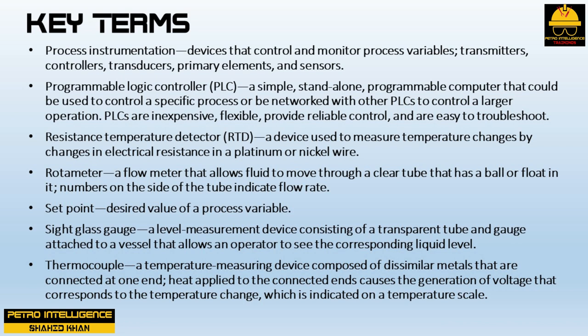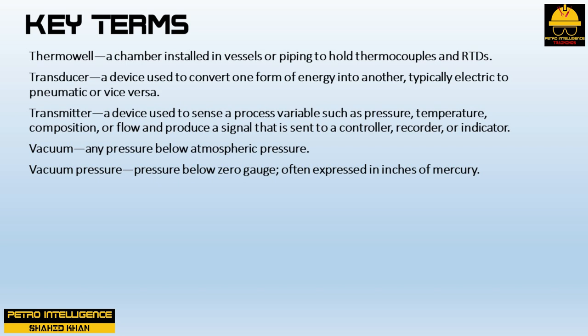A rotameter is a flow meter that allows fluid to move through a clear tube with a ball or float; numbers on the side indicate flow rate. A set point is the desired value of a process variable. A sight glass gauge is a level measurement device consisting of a transparent tube attached to a vessel that allows an operator to see the liquid level. A thermocouple is a temperature measuring device composed of dissimilar metals connected at one end; heat applied causes voltage generation corresponding to temperature. A thermowell is a chamber installed in vessels or piping to hold thermocouples and RTDs.